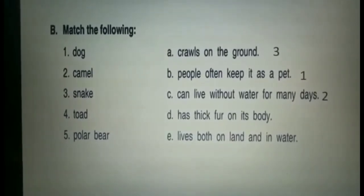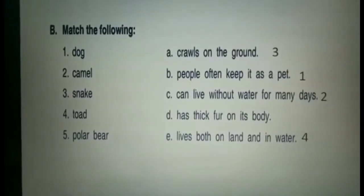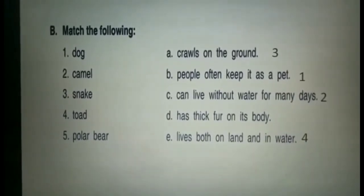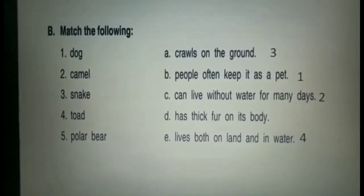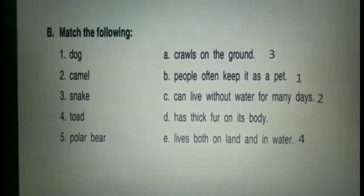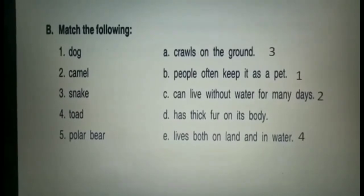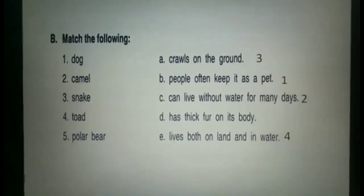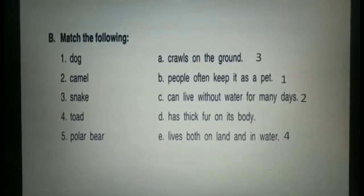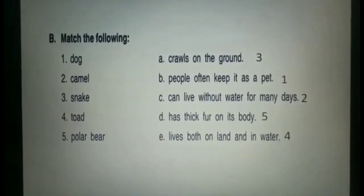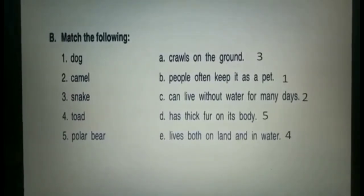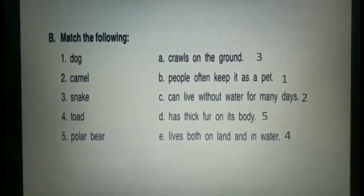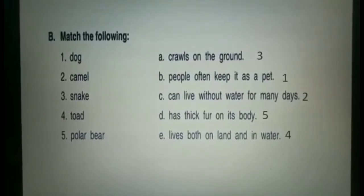Write 4 in front of E. Let me tell you that toad is an example of a frog — it is a big frog. Next is polar bear — the answer is: has thick fur on its body. Option D is the answer, so write 5 in front of D. Now Part B, match the following, is complete.